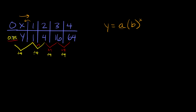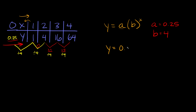So our a is going to be equal to 0.25. And then we need to figure out b, our multiplier — which we already found: we kept multiplying by 4 going down the table. So our multiplier b is equal to 4. We can fill out our exponential function: y is equal to 0.25 times 4 raised to the x. Boom!